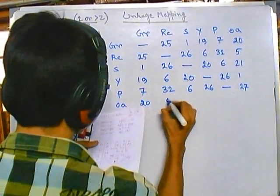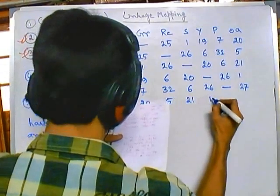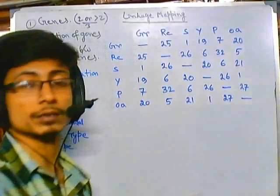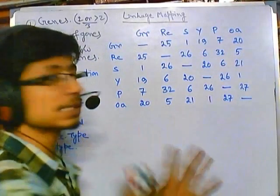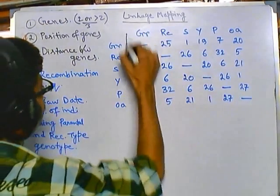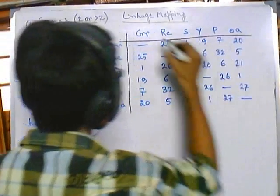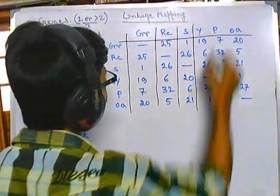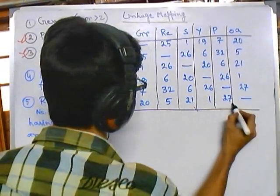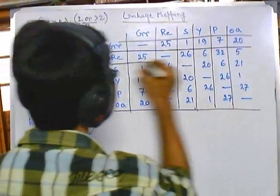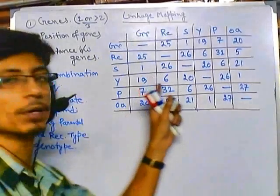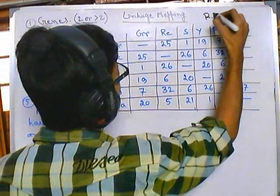They can provide us many genes to confuse us. Here you have seen that there are six genes in this particular example to make us confused. But don't be confused, because these problems are easier than the three-point test cross problems. So here is the table — the numbers you can see in all these boxes are the recombination frequency, so it is called a recombination frequency table.